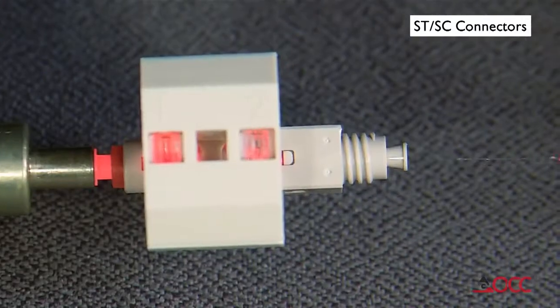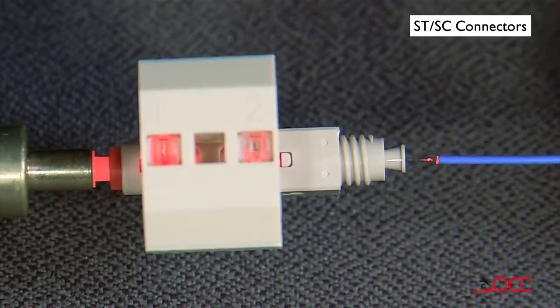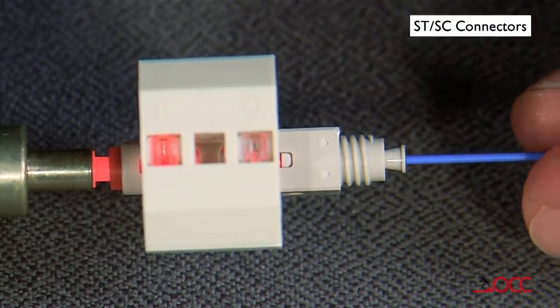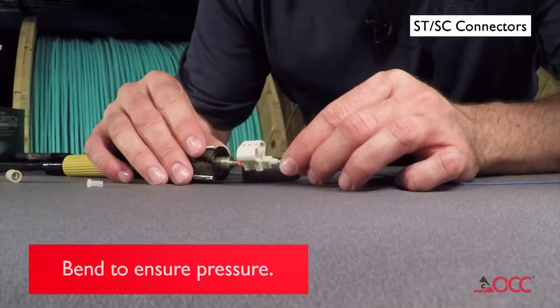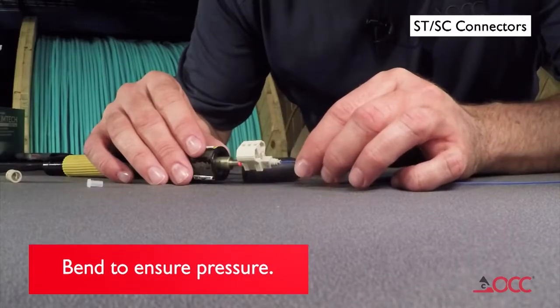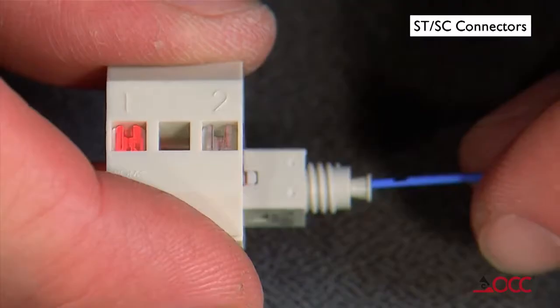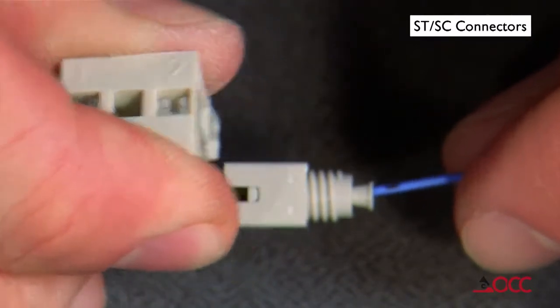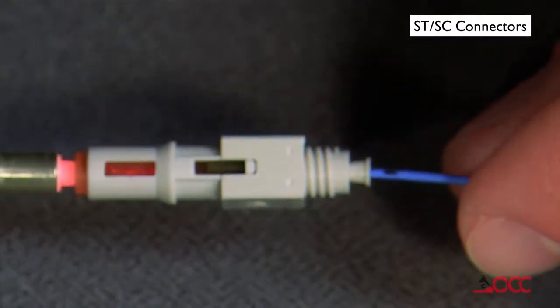Insert the cleaved fiber into the rear of the connector until the red glow dims in position one. Make a small bend in the fiber to maintain pressure on the connection.